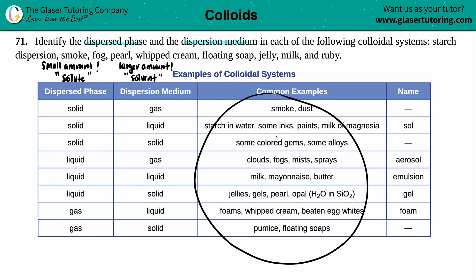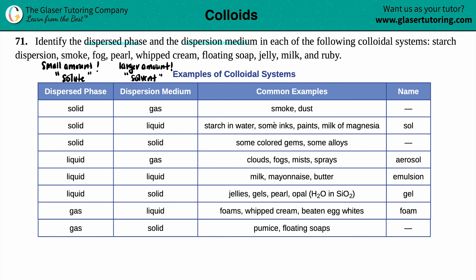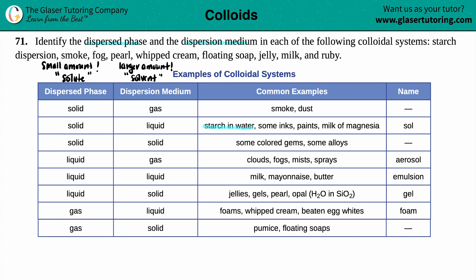Here are all the examples classified as colloids. For starch dispersion — it didn't say starch dispersion on the chart but starch in water is the same thing. For that starch dispersion, it's a small amount of solid being placed into a larger amount of liquid. So the dispersed phase is a solid and the dispersion medium is a liquid.